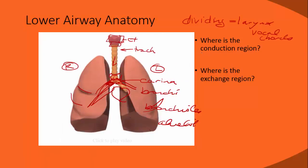The respiratory tract is divided into conduction zones — the airways where no oxygen or CO2 exchange occurs — and respiration zones or regions, where exchange occurs in the alveoli through the capillaries.